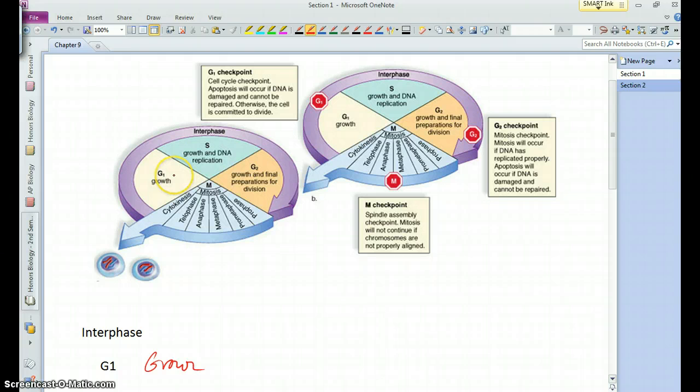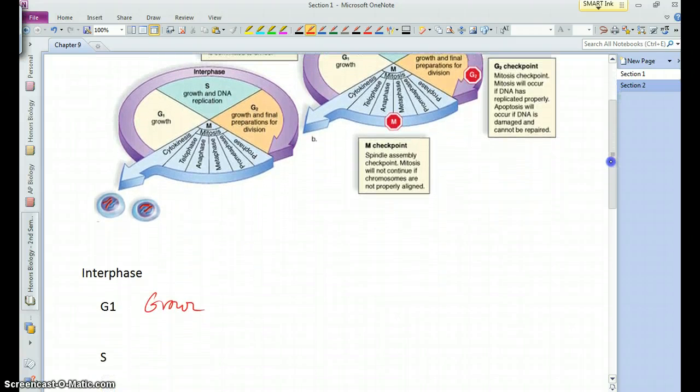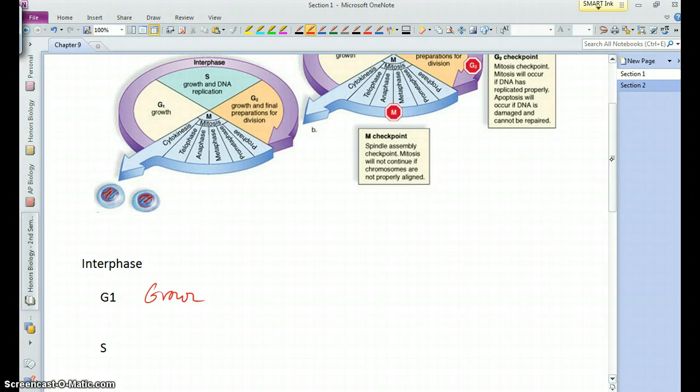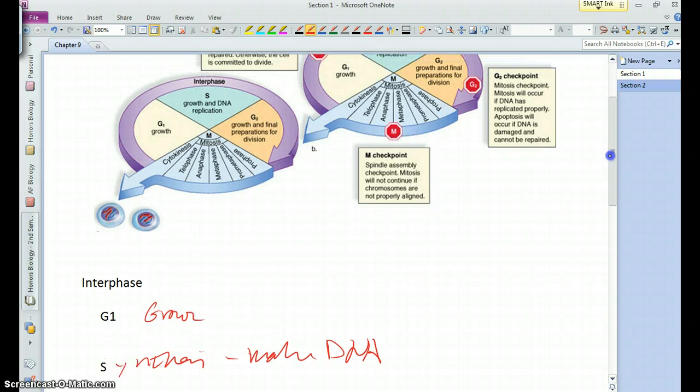Sometimes the cell will just hang out in that step and do what it is supposed to do. But if that cell is going to divide again, it enters what's called the S phase of interphase. You can think of this as the synthesis phase. This is where we basically make DNA or duplicate the DNA in preparation for division. Because if we're going to take one cell and divide it into two, we have to make more DNA, or else those two cells will not have enough of it.